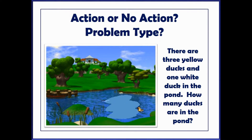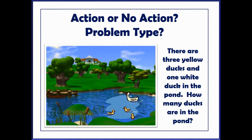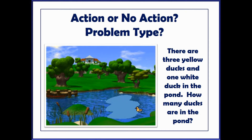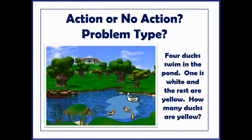Here's another one: there are three yellow ducks and one white duck in the pond — how many ducks are in the pond? Now, although these ducks are swimming, there's really no action of physically adding ducks to the set or taking ducks away. Your whole set is there, so there's no action in this problem. And we are trying to figure out the total, so the total is unknown.